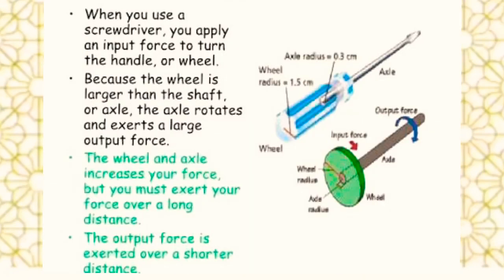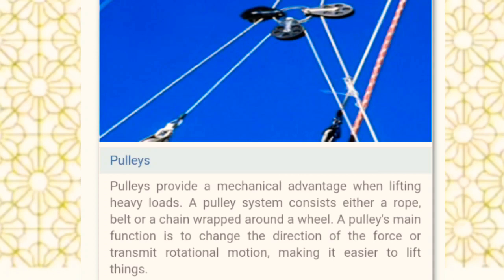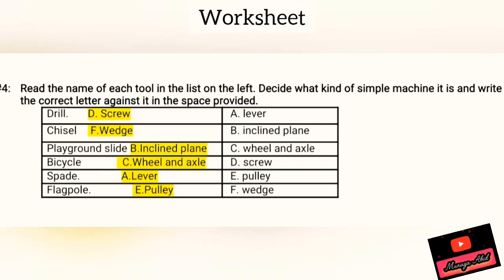A wheel and axle is a rotating device that exerts a force at its center or axle when the outer edge is turned. A pulley is a grooved wheel or set of wheels around which a rope or chain passes in order to move a load.